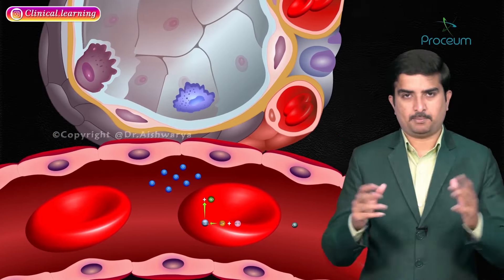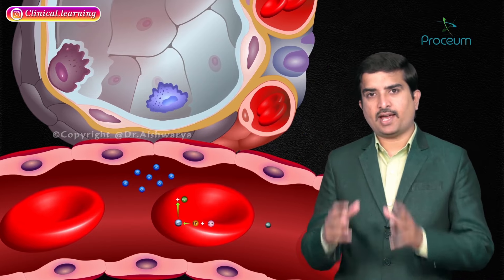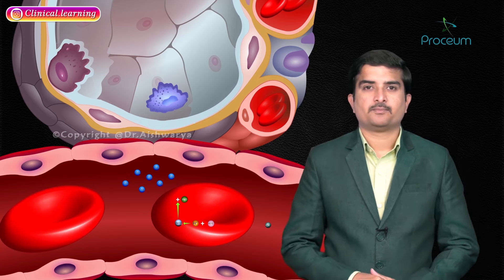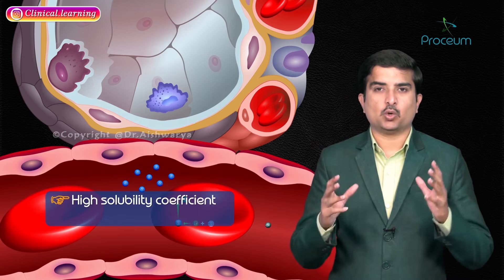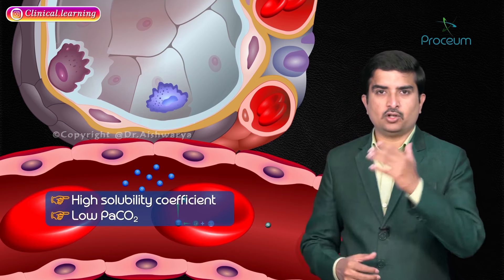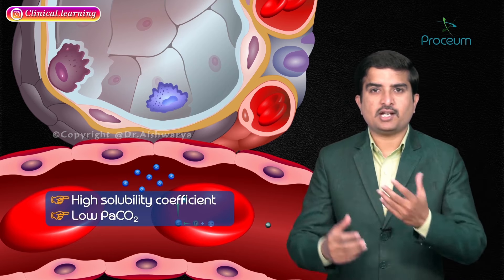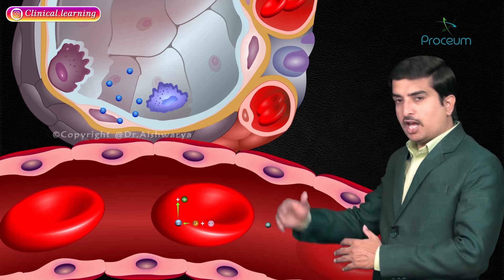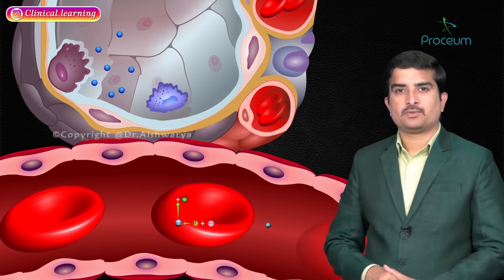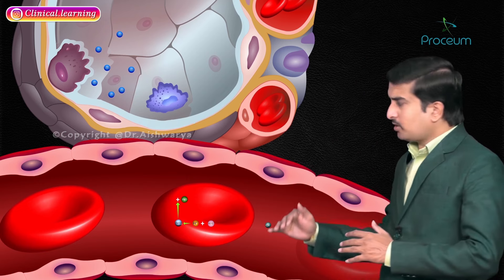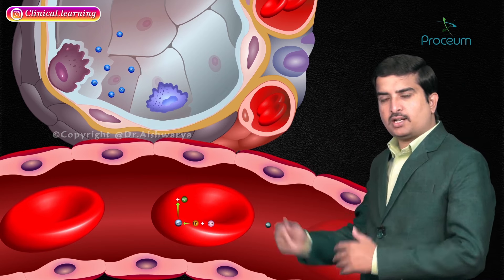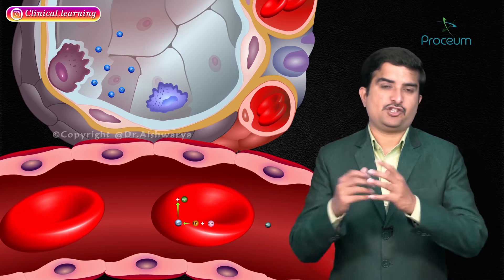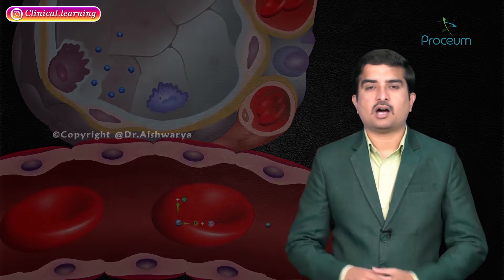A reverse chloride shift and reversal of all these actions occurs in the RBCs of the pulmonary capillaries, producing expired carbon dioxide. The high solubility coefficient and low partial pressure of alveolar carbon dioxide stimulates diffusion of carbon dioxide from the pulmonary capillaries into the alveolar air. The decrease in partial pressure of carbon dioxide also allows hemoglobin to bind oxygen more efficiently.